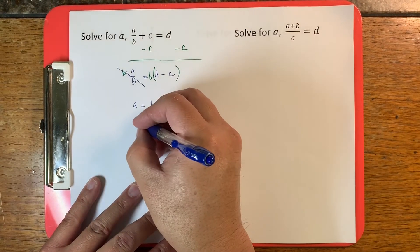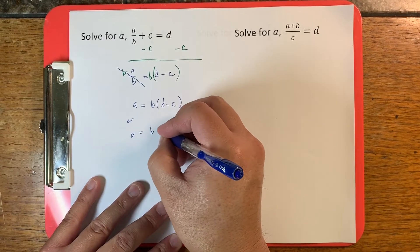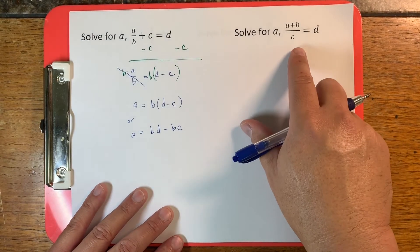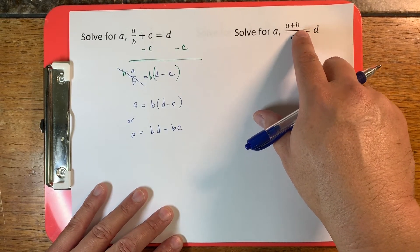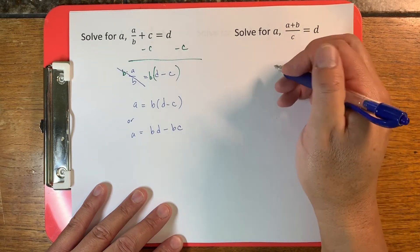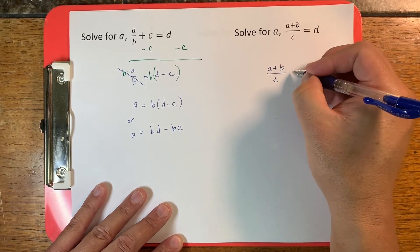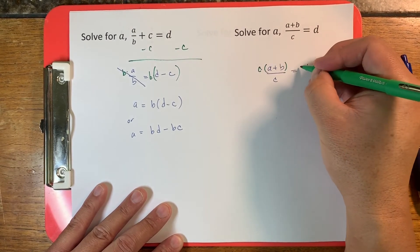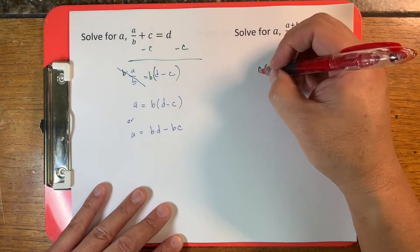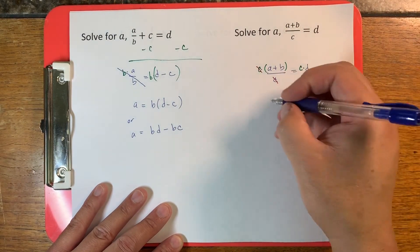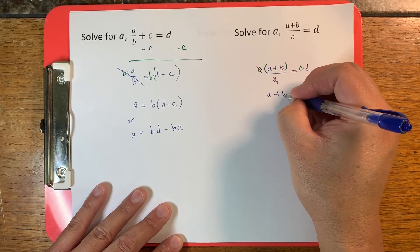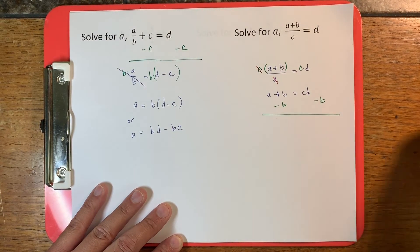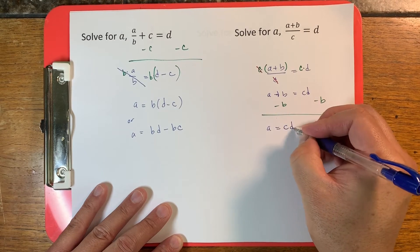I'm fine with that as your answer. Some people feel uncomfortable if they don't distribute it — that's fine also; both are correct. On the other variant, we can't just get rid of b because a and b are tied together by the division. So the first thing we do is multiply both sides by c to eliminate the division, the c's cancel, and we get a plus b is equal to cd. Then subtract b from both sides to get a is equal to cd minus b.